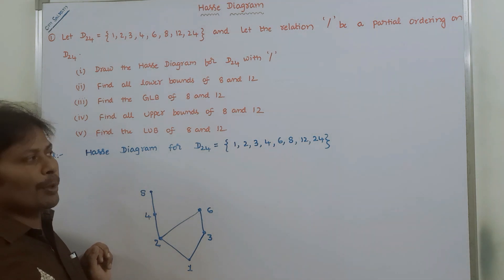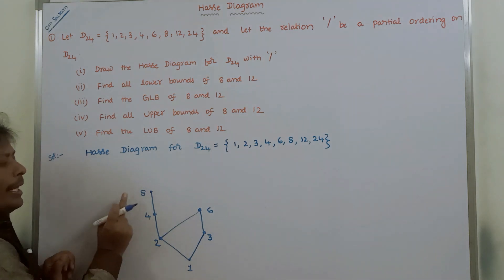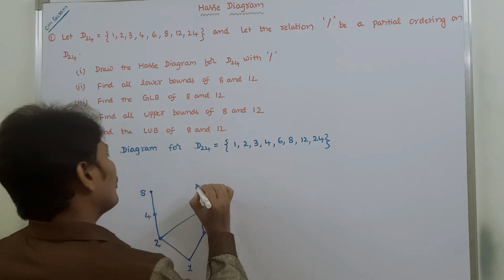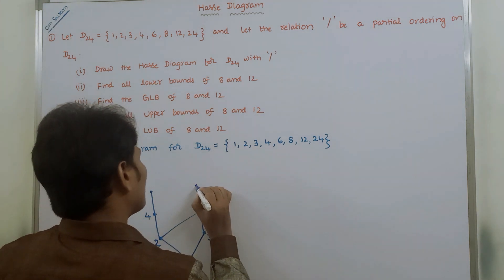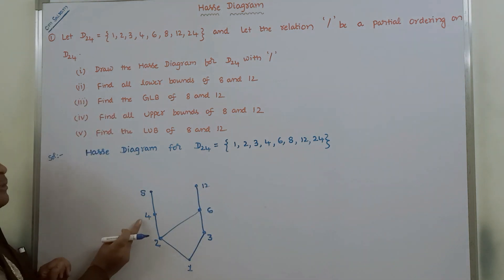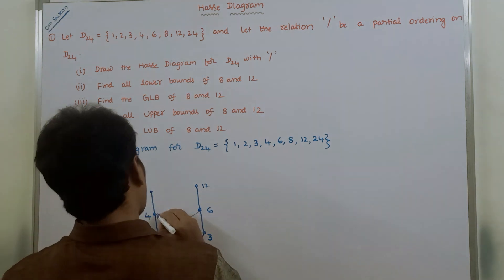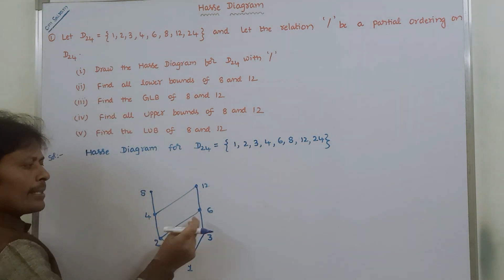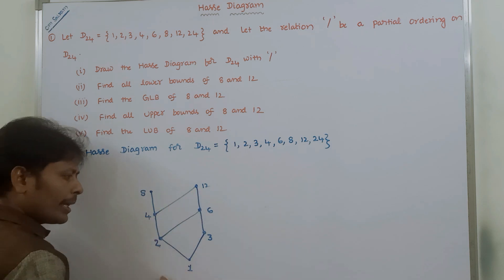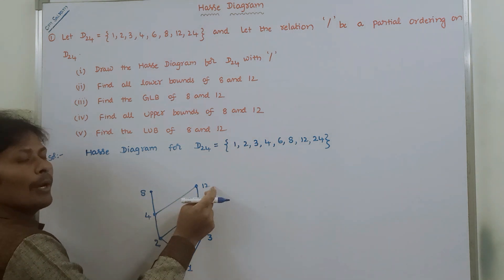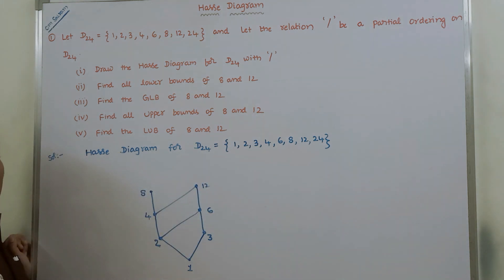For element 12: 8 does not divide 12, so we do not draw an edge between 8 and 12. 6 divides 12, so we draw an edge between 6 and 12. 4 divides 12, so we draw an edge between 4 and 12. 2 divides 6 and 6 divides 12, and also 2 divides 4 and 4 divides 12, so automatically 2 divides 12 by the transitive property — no direct edge needed.